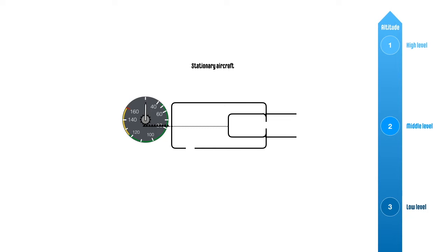For a stationary aircraft at middle-level altitude, static pressure from the static port is two units and the total pressure from the pitot tube is also two units. Since the aircraft is not moving, there is no dynamic pressure coming from the pitot tube. The airspeed is zero knots since both pressures are equal and cancel each other out.